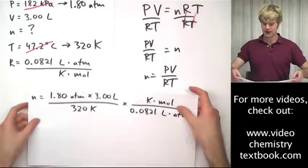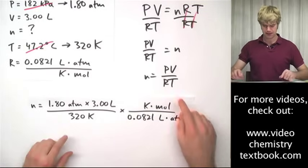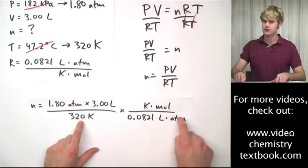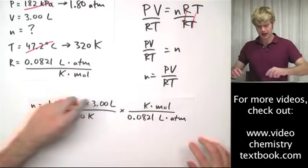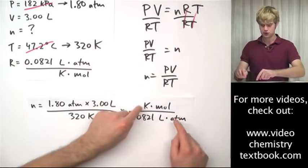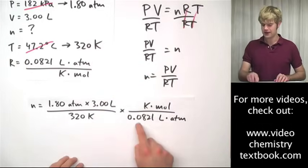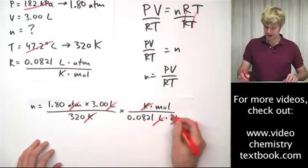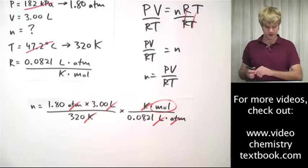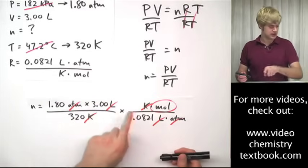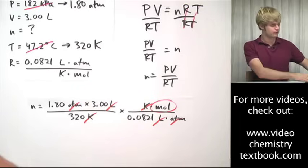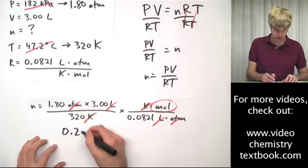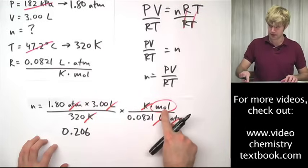So here is what I get when I plug these values in. I have pressure and I have volume. I have temperature and I've left R till the end. Because R is on the bottom, I take the value that I have here and I flip it. So I have Kelvin, moles and then the number, liters, ATM. Cancel the units and I'm left with moles. And when I do out this math, this times this divided by this times this, final answer that I get rounded to three significant figures is 0.206. And there's my units, moles.